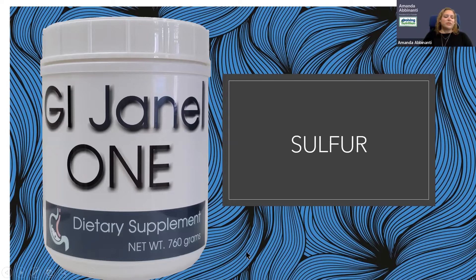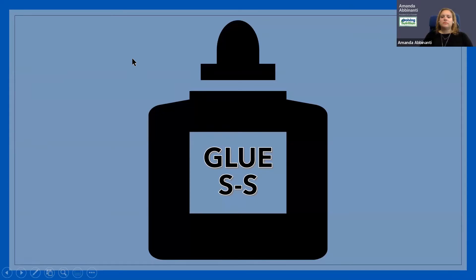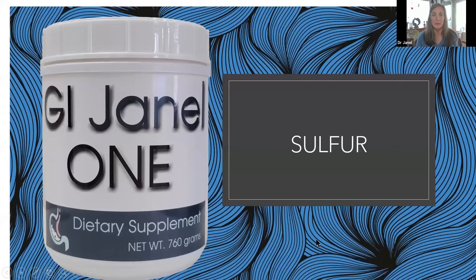That's wonderful. So what deficiencies did the GI Janelle 1 repair, do you think? Well, that's what we're going to look at in these slides. So essentially what we're going to focus on in this webinar is sulfur, sulfur deficiency, the concept of sulfur.